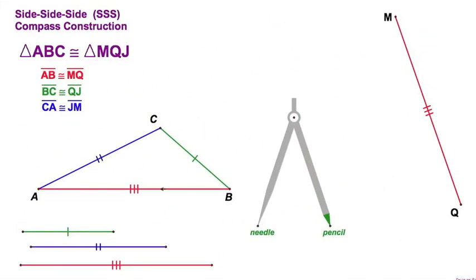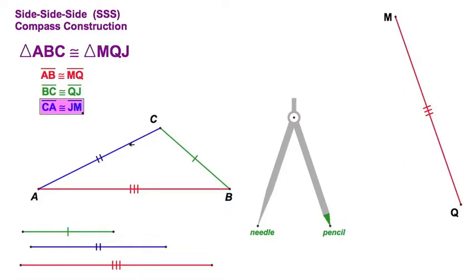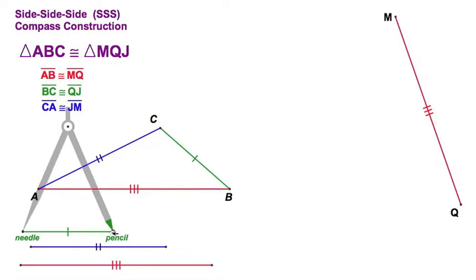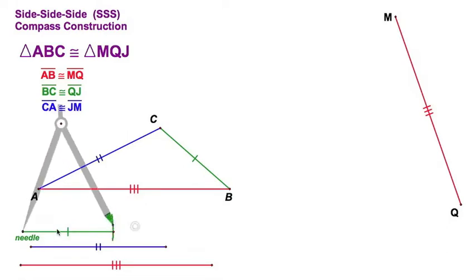Another triangle: ABC congruent to MQJ. The AB and the MQ are clearly a match, so we've got to figure out the rest. The BC must correspond to QJ, so I'm knowing that the short or green segment goes to the Q. And of course CA congruent to JM — the blue or medium segment goes there. Put the needle on one point, spread your compass so it lines up right, and give it a good dynamic swing.